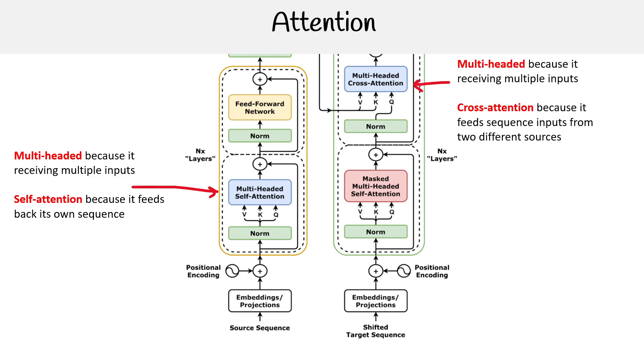On the other side, we have multi-headed cross-attention. It's multi-headed because it's receiving multiple inputs, so we have the V, K, Q. But it's cross-attention because it feeds sequences from two different sources.